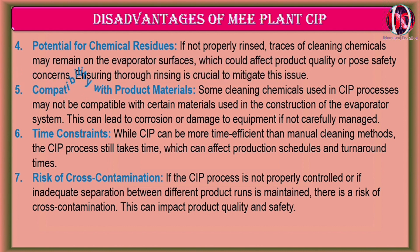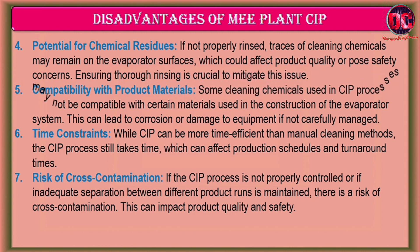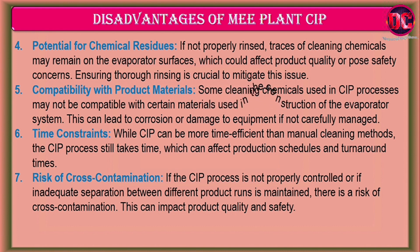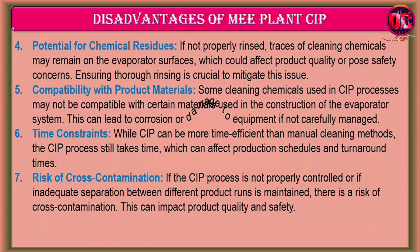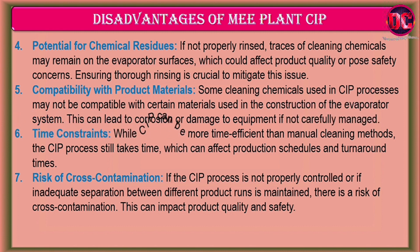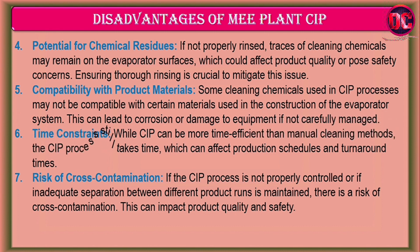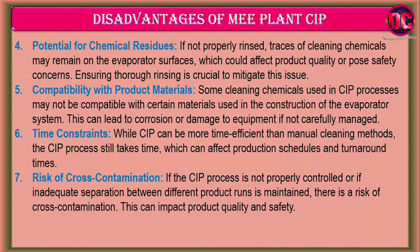5. Compatibility with Product Materials: Some cleaning chemicals used in CIP processes may not be compatible with certain materials used in the construction of the evaporator system. This can lead to corrosion or damage to equipment if not carefully managed. 6. Time Constraints: While CIP can be more time efficient than manual cleaning methods, the CIP process still takes time, which can affect production schedules and turnaround times.